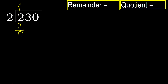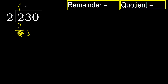Subtract 0, eliminate 0 on this side. 3 is not less, therefore proceed with 3. 2 multiplied by 2 is 4 — 4 is greater. 2 multiplied by 1 is 2, which is not greater.